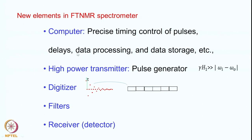The delays have to be properly adjusted and controlled — for example, we may need to give a pulse of 10.2 microseconds. Data processing is an integral part of the FTNMR spectrometer because Fourier transformation is one of the important elements, and there are many others related to that. Data storage is in binary form in the computer, so many things get added as a result of this change in spectrometer structure.